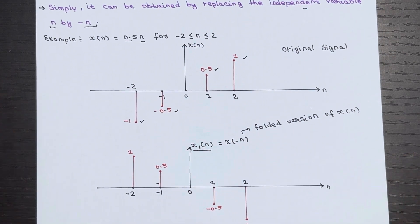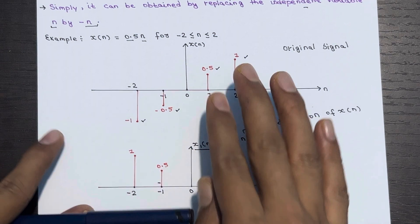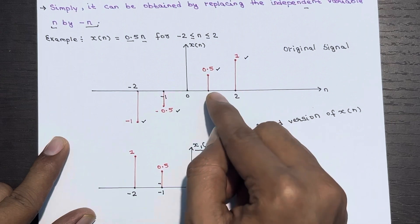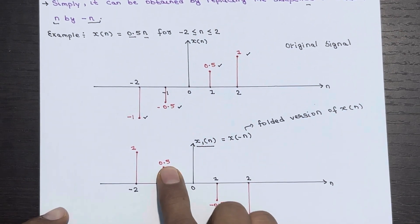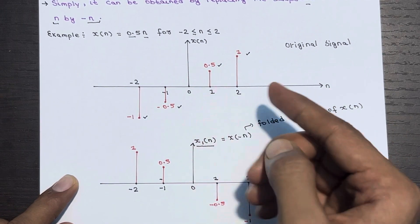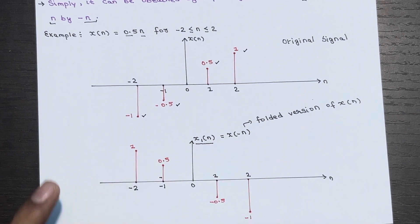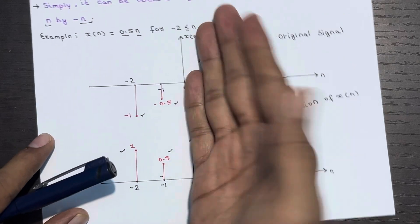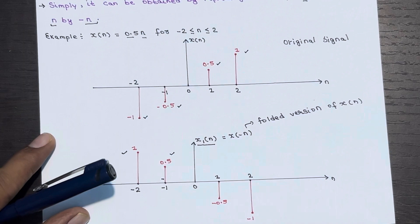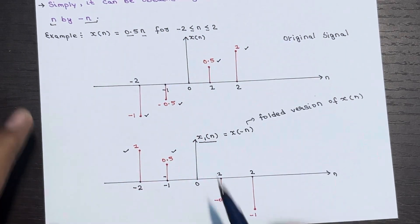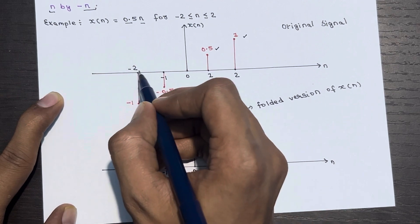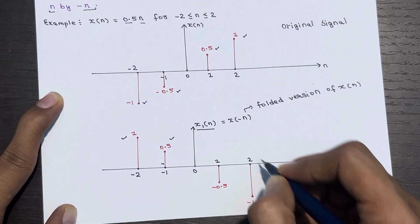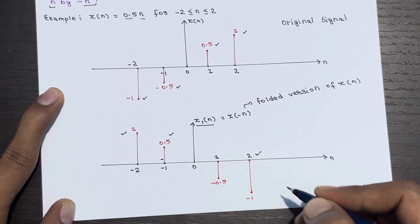To represent the folded signal graphically, simply fold the original signal about the time origin. At n equals 1 you get 0.5, so after folding, at n equals minus 1 you get 0.5. At n equals 2 you get 1, so after folding, at n equals minus 2 you get 1. Similarly, at minus 1 the value was minus 0.5, so after folding, at n equals 1 you get minus 0.5. At minus 2 the value was minus 1, so after folding, at n equals 2 you get minus 1. This is the folded signal of X of n.